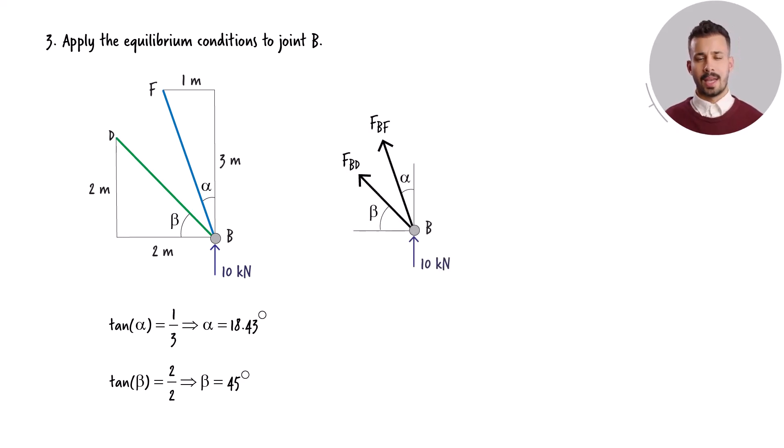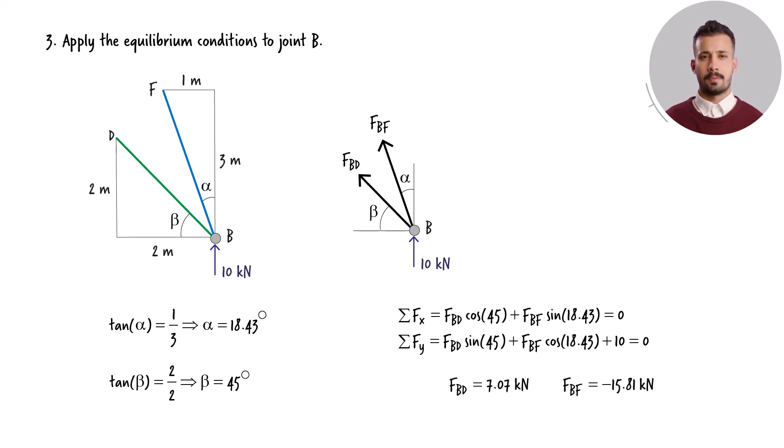Here is the free body diagram of joint B. The equilibrium equations for the joint can be written and solved for the unknown forces. The direction of the forces acting on each member is indicated by the sign of the force. If a force has a positive sign, it means the member is experiencing tension. Conversely, a negative sign denotes that the member is subjected to compression. In this case, member BD is experiencing tension, whereas member BF is in a state of compression.